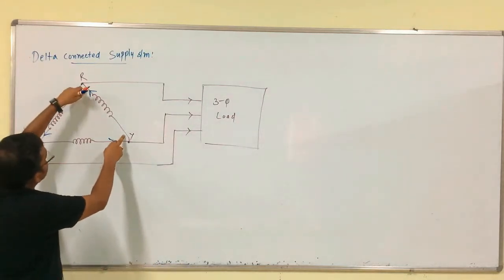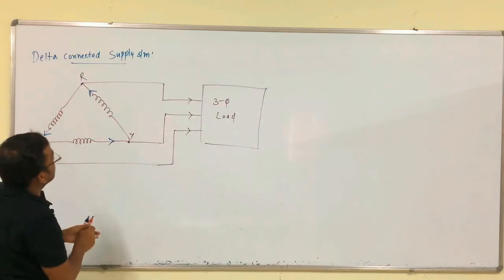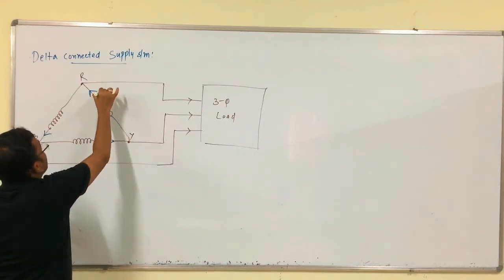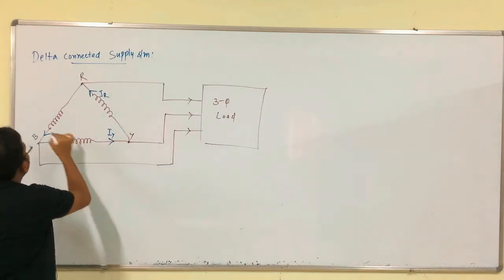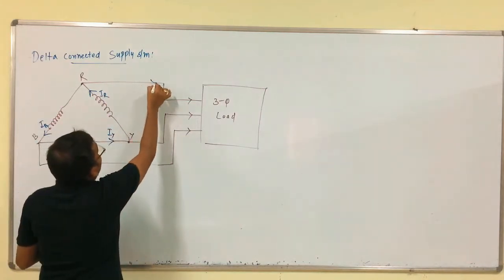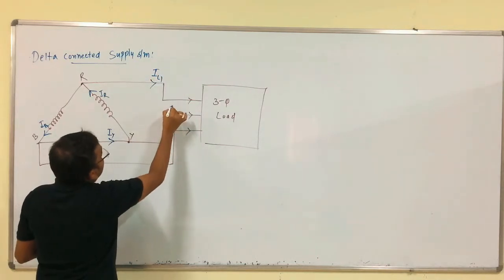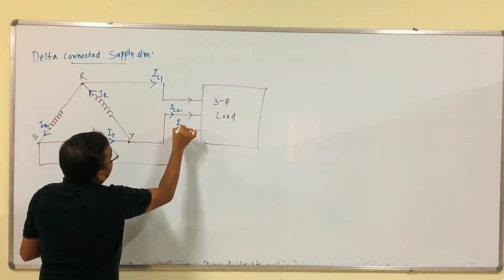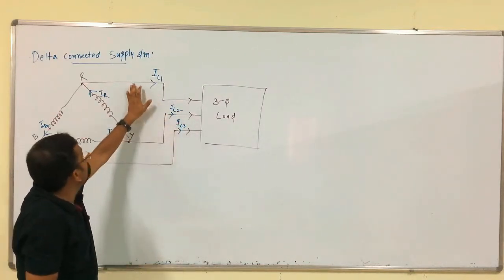This is phase one, another phase, and another phase. The phase currents are I_R, I_Y, and I_B. The line currents are I_L1, I_L2, and I_L3.